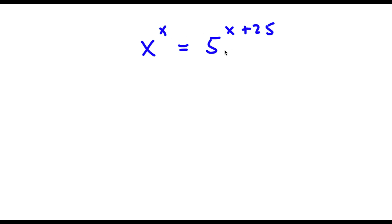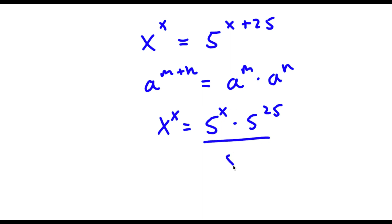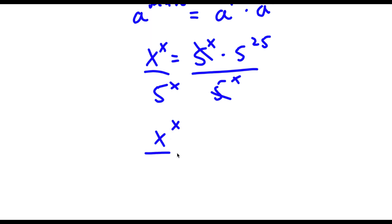Alright, so I have x to the power of x is equal to 5 to the power of x plus 25. If I have something in the form a to the power of m plus n, this is the same thing as a to the power of m times a to the power of n. So 5 to the power of x plus 25 is going to equal 5 to the power of x times 5 to the power of 25. Now I can divide both sides by 5 to the power of x, so I will have x to the power of x over 5 to the power of x is equal to 5 to the power of 25.